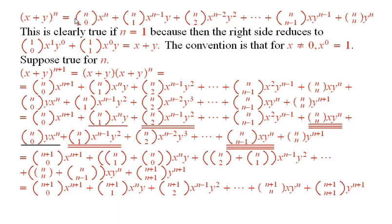So, suppose that this formula up here is true for an arbitrary n, a positive integer. Then we can write x plus y to the n plus 1 is equal to this. And this would be the same as taking x times this expression, plus y times this expression.